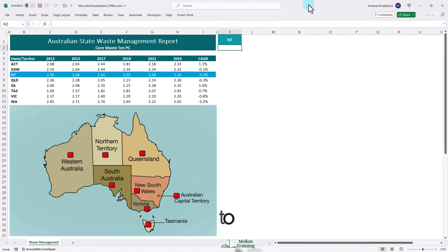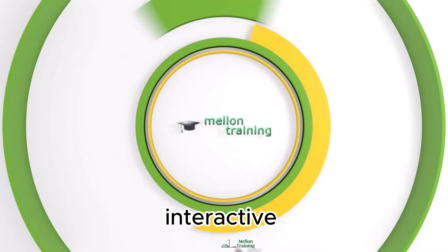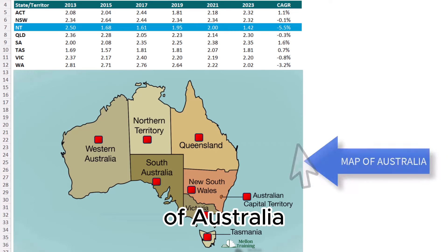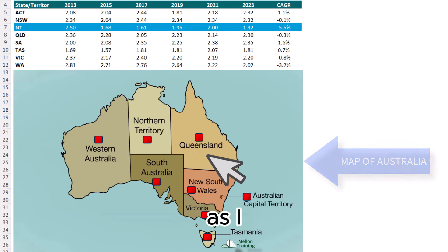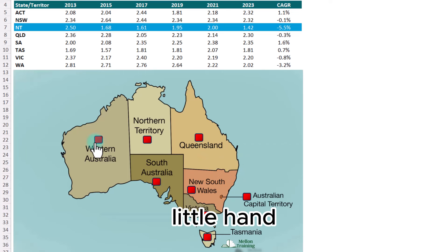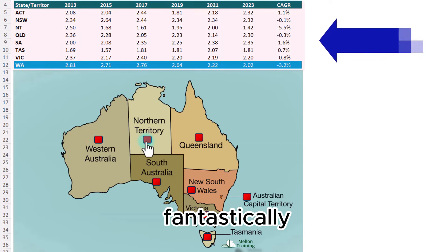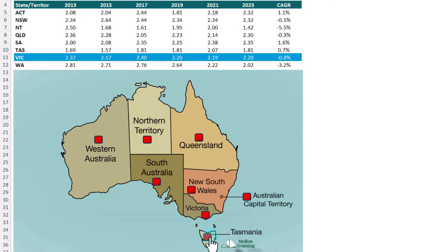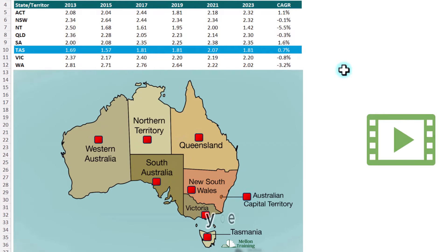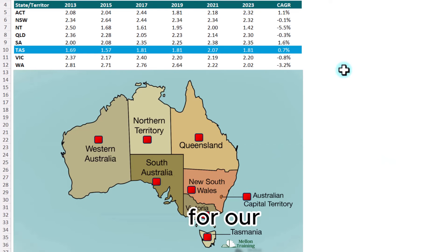In this video tutorial, we're going to introduce and create macros for creating visualizations both interactive and automated. Here we have a map of Australia with the territories and red square shapes on each of these states. As I hover over the red shapes, I get that little hand icon and when I click on it, it works fantastically. It shows me the core waste ton for each state. So by the end of this video, you're going to build some fantastic interactive features for our visualizations and our worksheets ready to use for dashboards and graphs. So let's dive in.